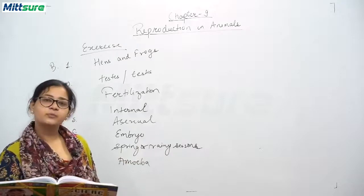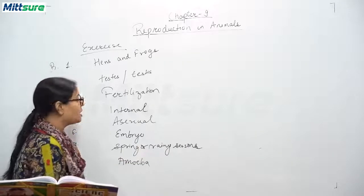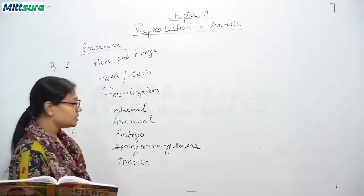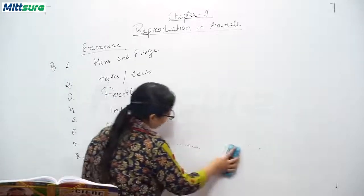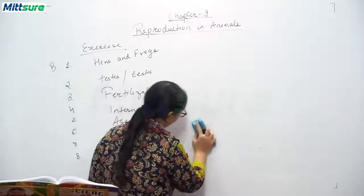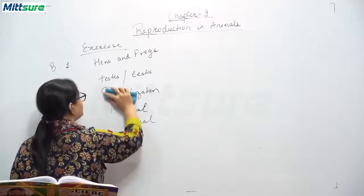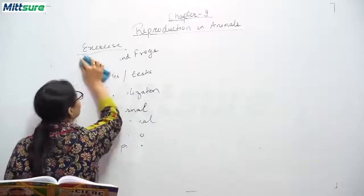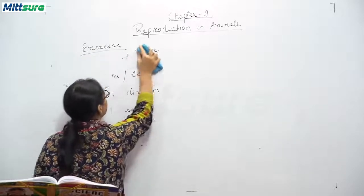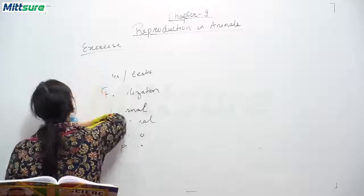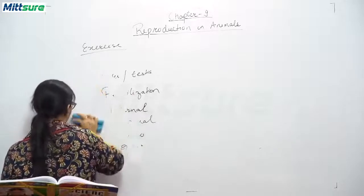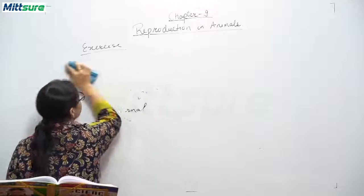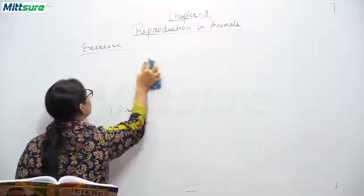Now we will be doing the next question: true and false. Write true or false for the following statements. If a statement seems correct, write true against it; if it seems incorrect, write false against it.